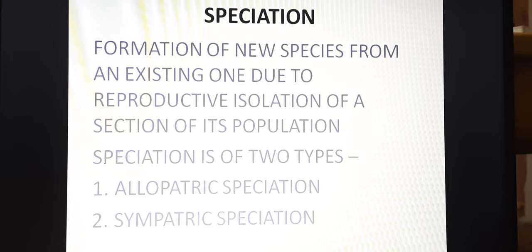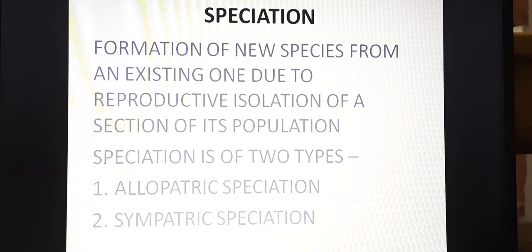Let us start with speciation. Speciation is the formation of new species from an existing one, due to reproductive isolation of a section of its population. That is, the two — male and female — are totally different, therefore they cannot interbreed among each other. So this is called speciation. Earlier they were from the same race or from the same family, but now due to different sections their reproductive ability has been lost — that is, they have changed morphologically.